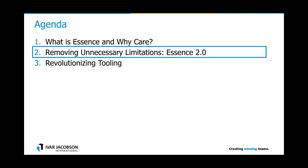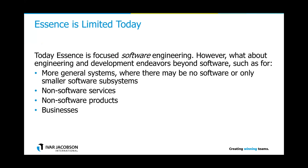I would like to continue with an overview of the limitations we see in the current Essence specification, and outline our approaches to solve and get rid of those limitations. Essence, when you look into the specification, is a standard focusing on software engineering. But what about all the other endeavors — projects or products which consist not only of software but also of hardware? Or there might be endeavors which do not have any software at all. That is currently a conflict we see in the specification.